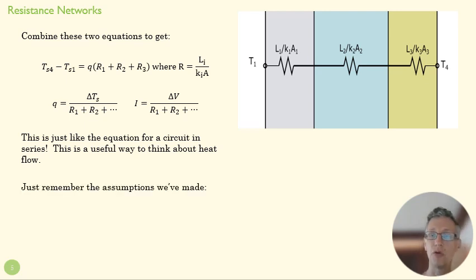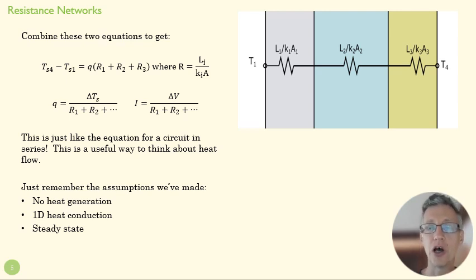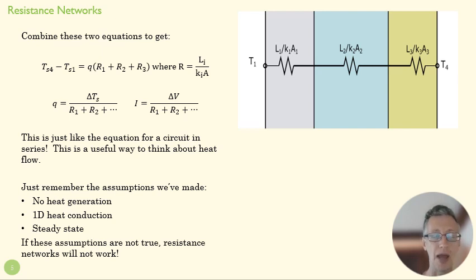Now, you have to remember what assumptions go into this resistance network before you use this sort of network thinking. You have to remember we don't have any heat generation here. There's no parallel to having some kind of heat generation in a circuit. This is only about 1D heat conduction. The metaphor is this is like a wire, and so all of that flow is headed in one direction, and that has to be at steady state. Okay, so we're not talking here about what's going to happen if we change T1 or T4. We're thinking about, over a long period of time, what's going to be the heat flow through these surfaces.